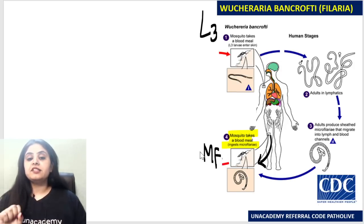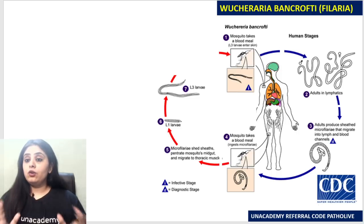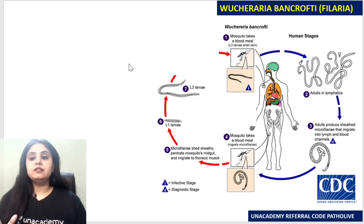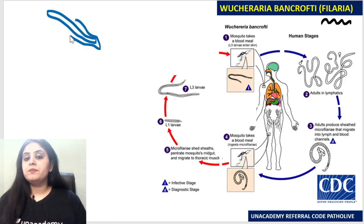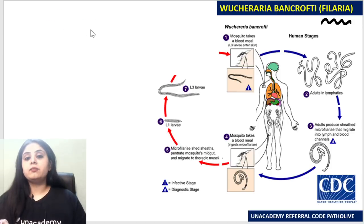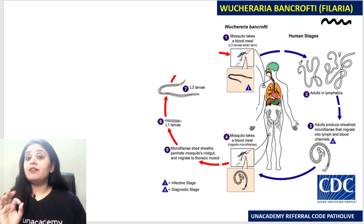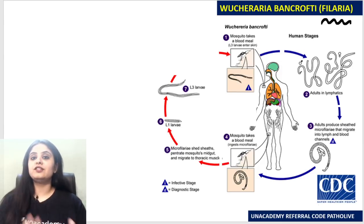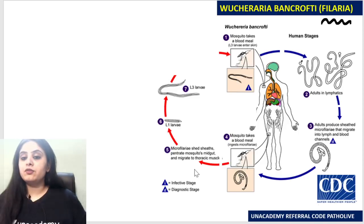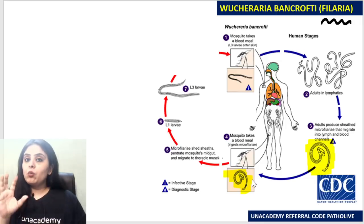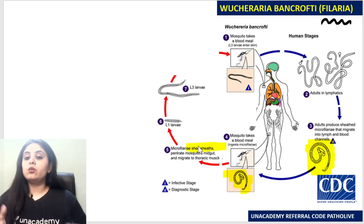Some filarial species have microfilaria with a sheath around them. In Wuchereria bancrofti, it is a sheathed microfilaria — it has a sheath around it. A separate summary session covering which species are sheathed, which are not, and which have nuclei extending to the tip will follow. For now, the microfilaria of Wuchereria bancrofti is sheathed.